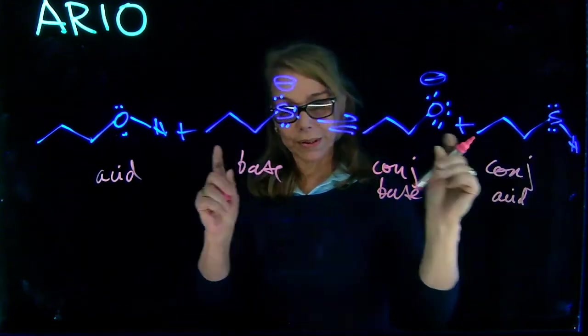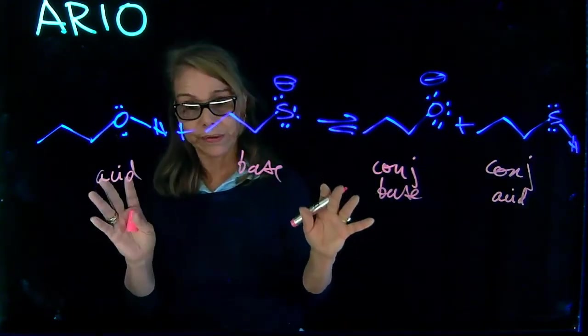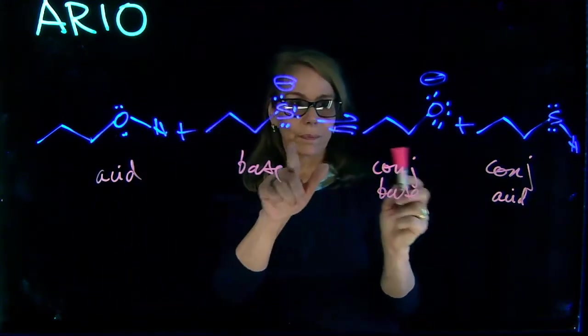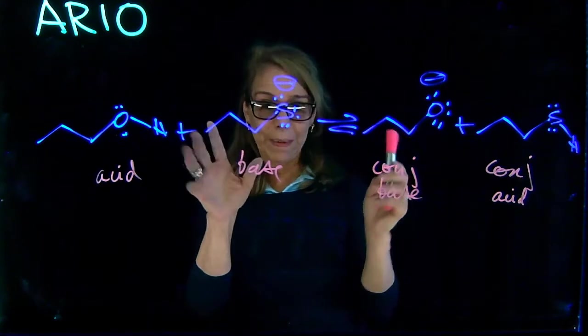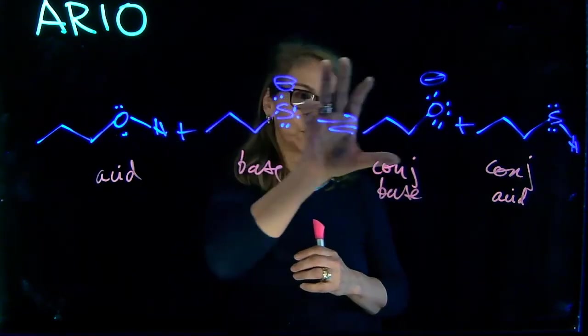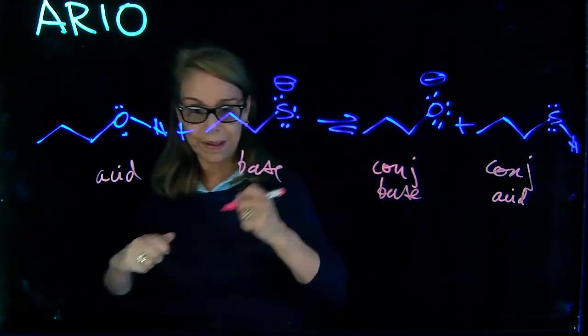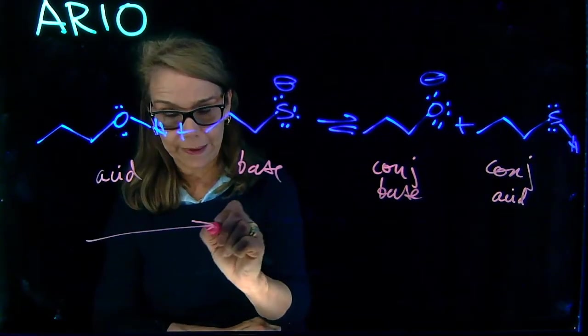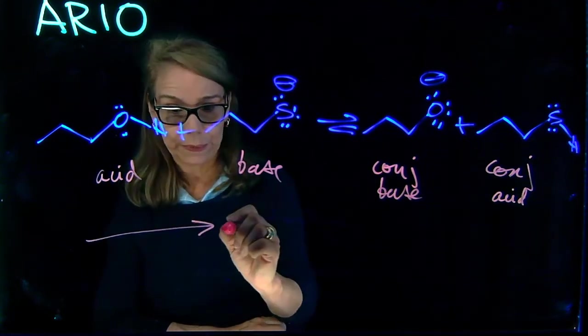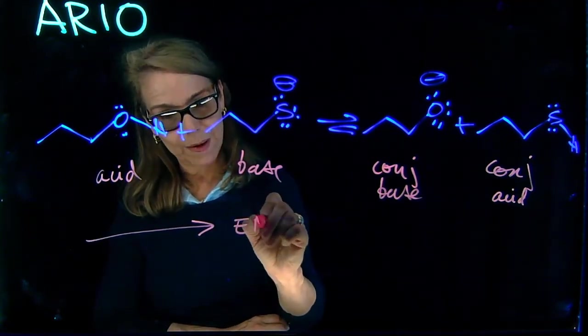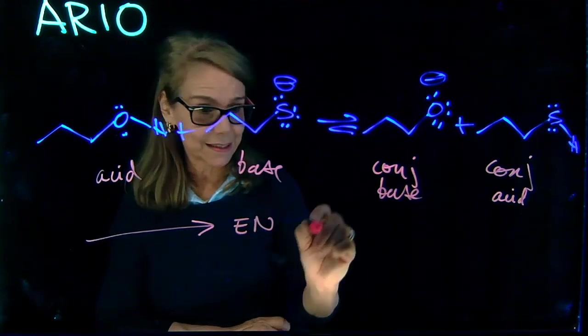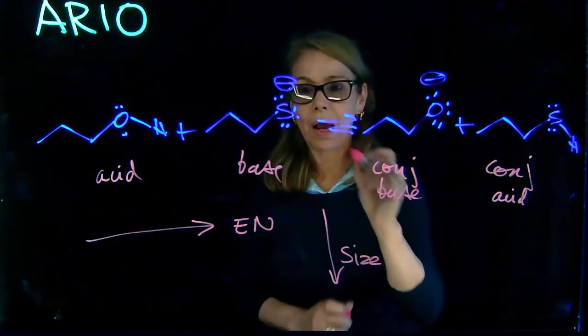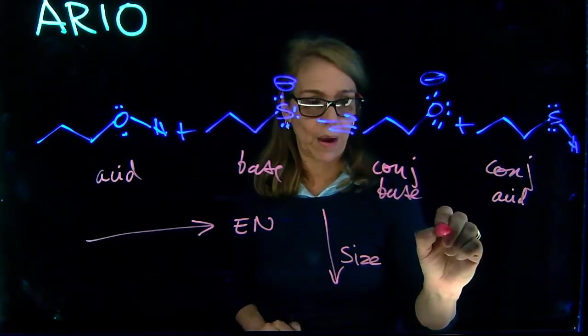So equilibrium is shifted towards the more stable species. So weakest acid, weakest base. When we analyze the conjugate bases here, the bases, the two bases, charge here on sulfur, charge on oxygen. Remember that we said that if we are on a period, on a period like that, the predominant effect will be electronegativity. But when we are analyzing things in a group, we're analyzing size.